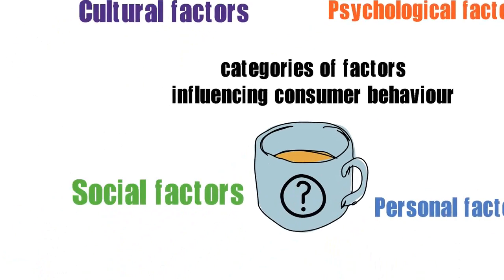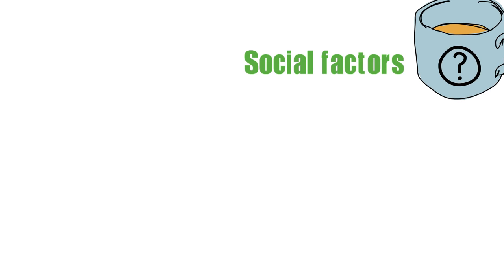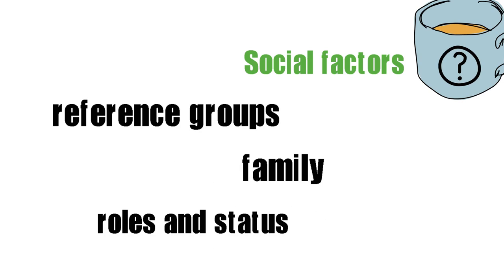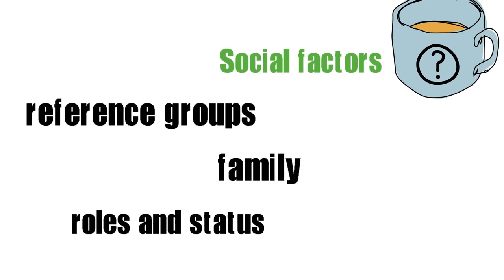The social context is also important. Our behavior patterns, likes and dislikes are influenced to a great extent by the people around us. Under this category we can include reference groups, family, roles, and status. We always seek confirmation from the people around us and seldom do things that are not socially acceptable. A reference group is a formal or informal group of people with whom an individual associates — this could include peer groups, membership clubs, and organizations. Family is another important factor. The person's position in a group can be defined in terms of roles and status. A role points out the activities the person is expected to perform, and each role relates to a certain status. People choose products that communicate their role and status in society.